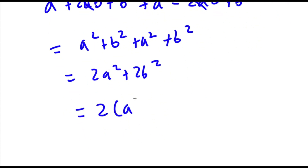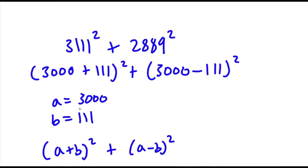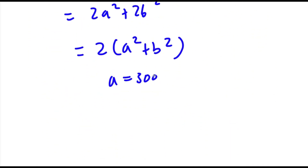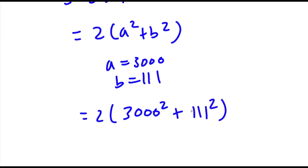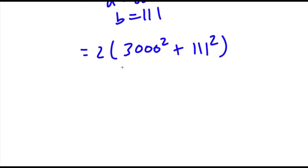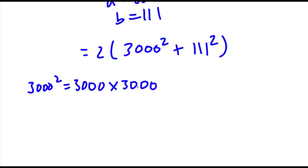Now if I factor out 2 from this I get 2 times (a squared plus b squared). Now remember we set a equal to 3,000 and b equal to 111. So now if I substitute these values back in I get 2 times (3,000 squared plus 111 squared). Now 3,000 squared is the same thing as 3,000 times 3,000. We can ignore the zeros and just do 3 times 3, which gives us 9, and then we add 6 zeros. So 3,000 squared is 9,000,000.